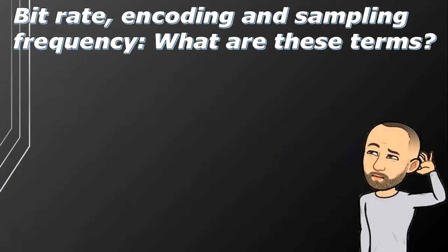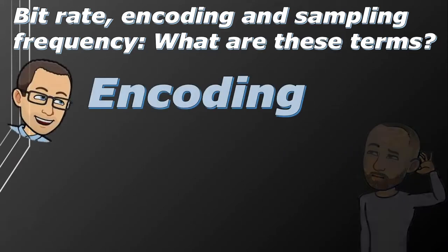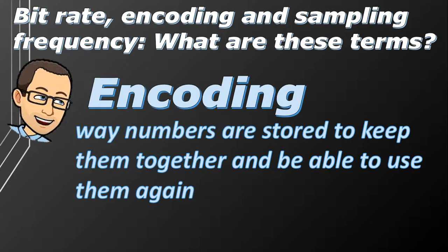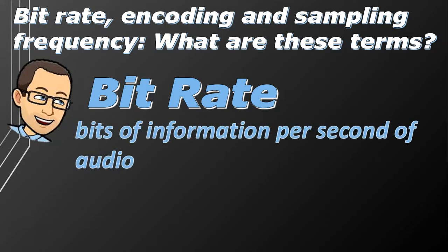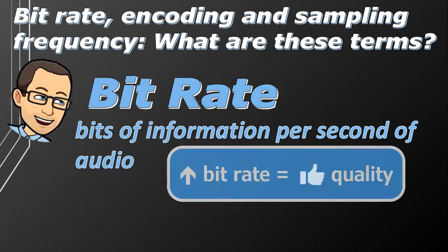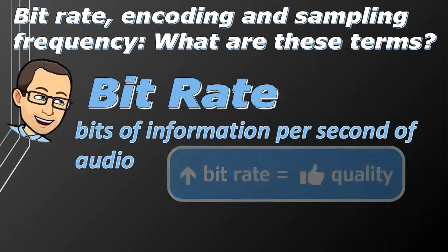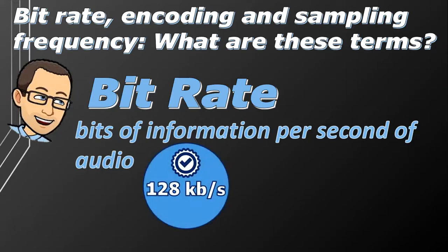I hear terms like bitrate, encoding, and sample frequency when dealing with audio files — what are all these terms about? Encoding just means the way that a computer stores numbers to keep them together and be able to use them again. Bitrate refers to how many bits of information an MP3 file stores per second of audio. The higher the bitrate, the better the sound quality, and the less likely you are to notice the difference between an MP3 and a WAV. 128 kilobits per second is the standard for MP3, and below that you might start noticing a decrease in sound quality, especially if you're listening on good headphones.